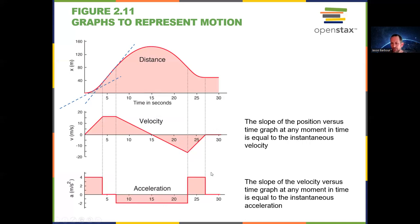The acceleration is equal to the slope of the velocity versus time graph. We'll have constant accelerations within each time period, and there are five time periods here. In this first period, the slope is a constant positive value — so constant positive acceleration. Here the slope is zero — zero acceleration. Here the slope is a negative constant value — a negative constant acceleration.